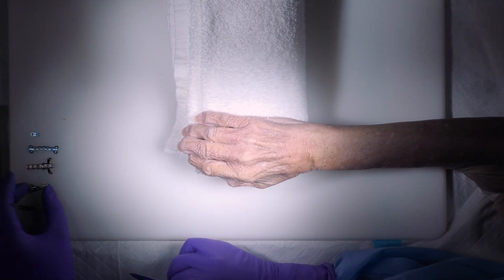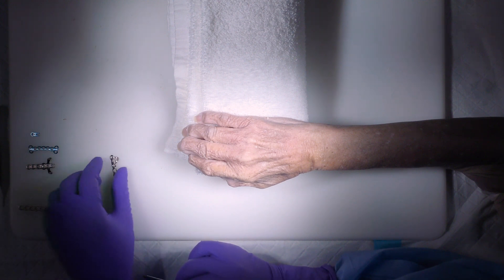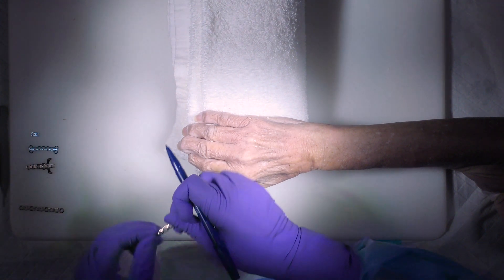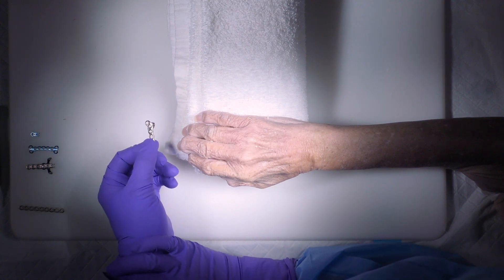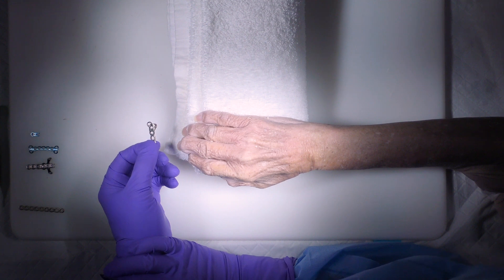We're going to look at the Boxer's fracture plate, which is a periarticular locking plate for Boxer's fractures, which typically represent metacarpal neck fractures.